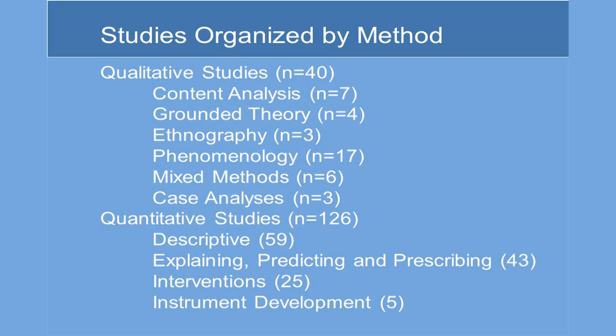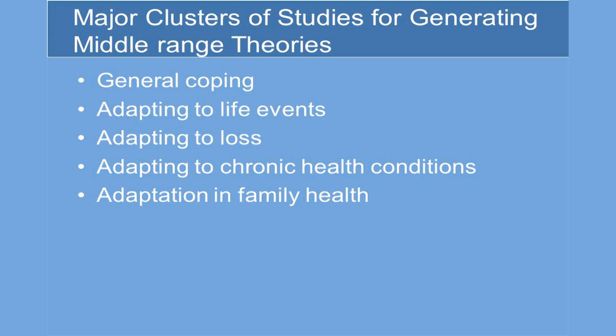In closing, through this process we now have major clusters of studies for generating middle-range theories. These theories will address: general coping, adaptation to life events, adaptation to loss, adapting to chronic health conditions, and adaptation in family health.